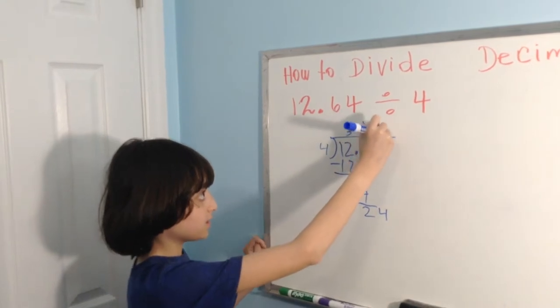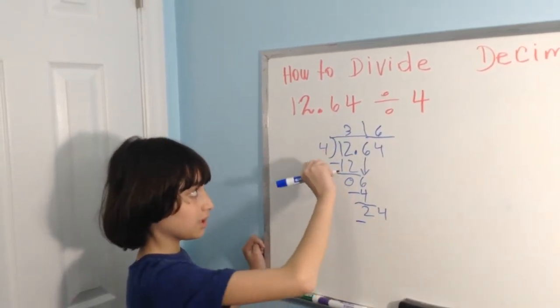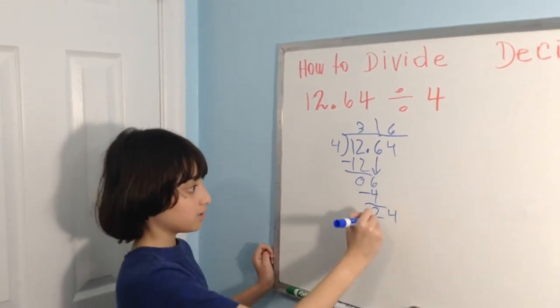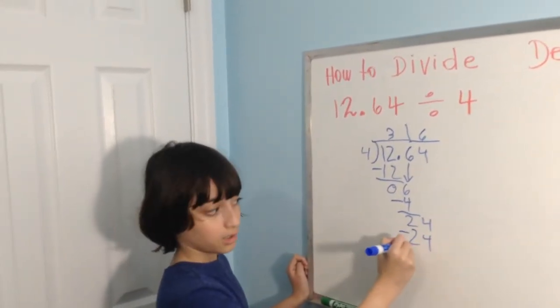4 times 6 is 24. 4 into 24 is 6 times. You already know. Okay, so 24, 0.